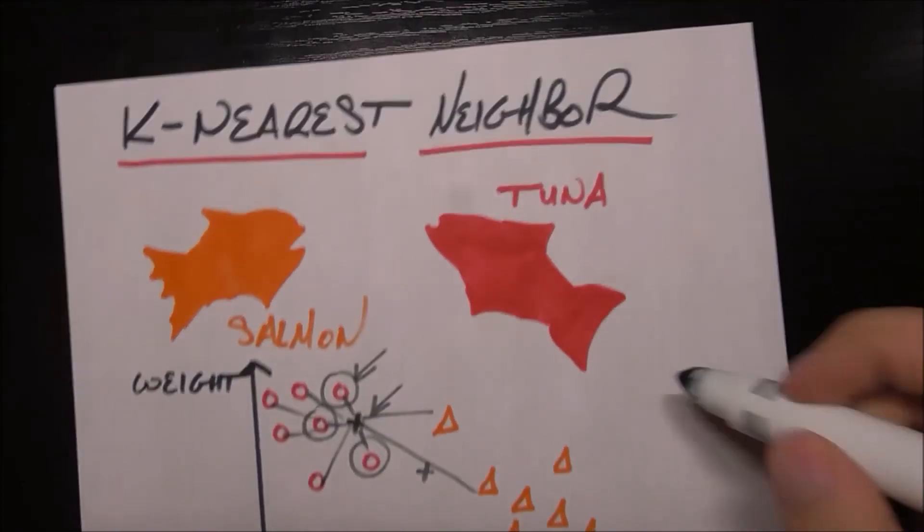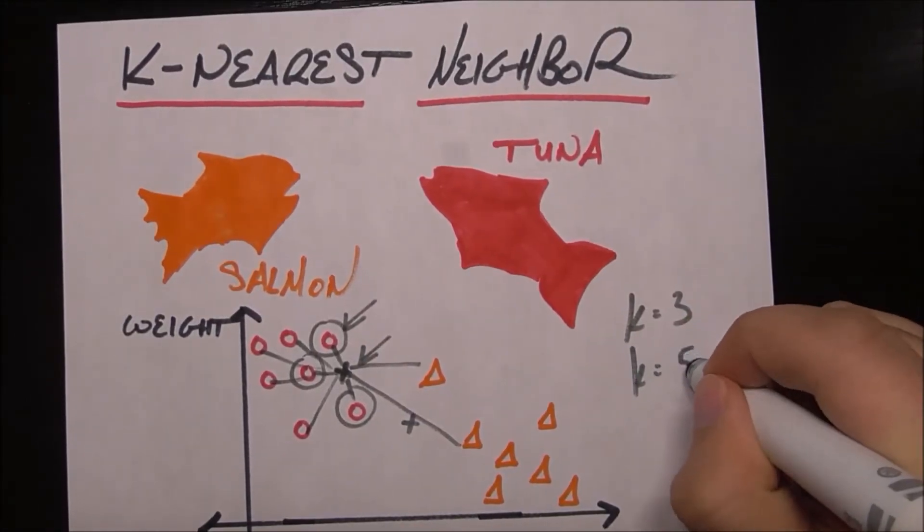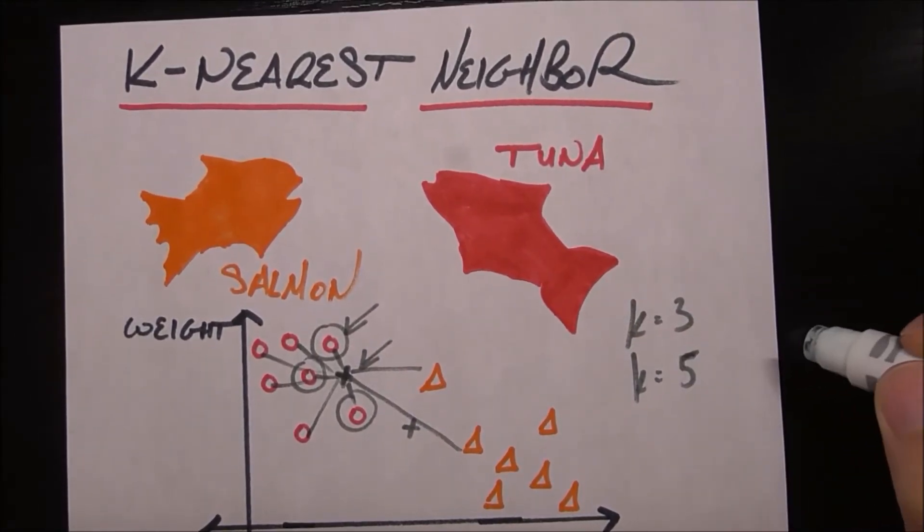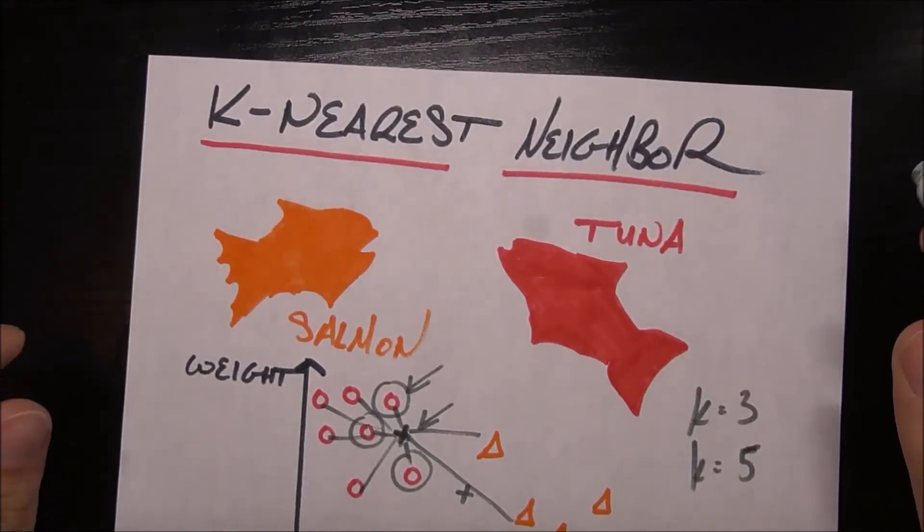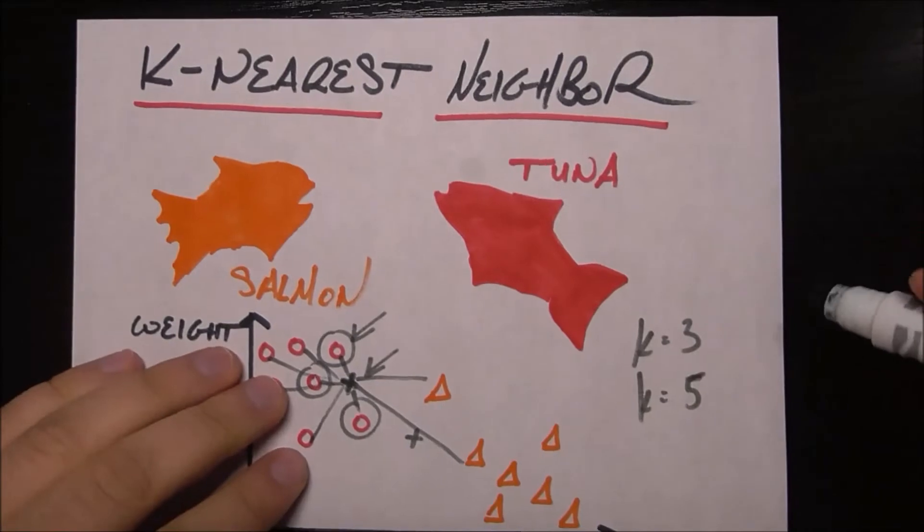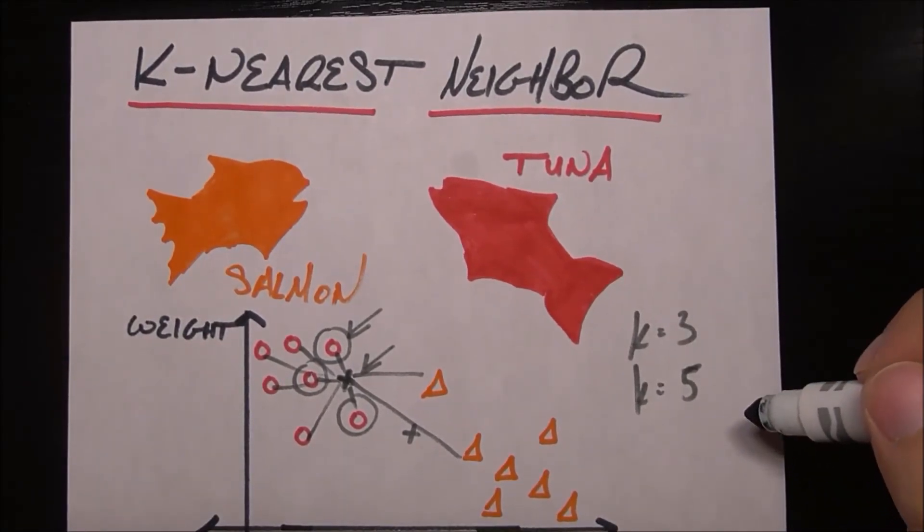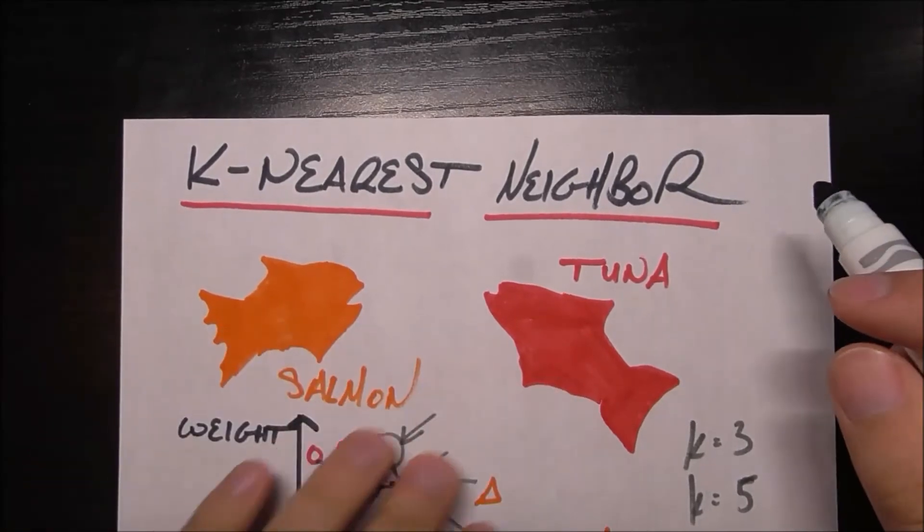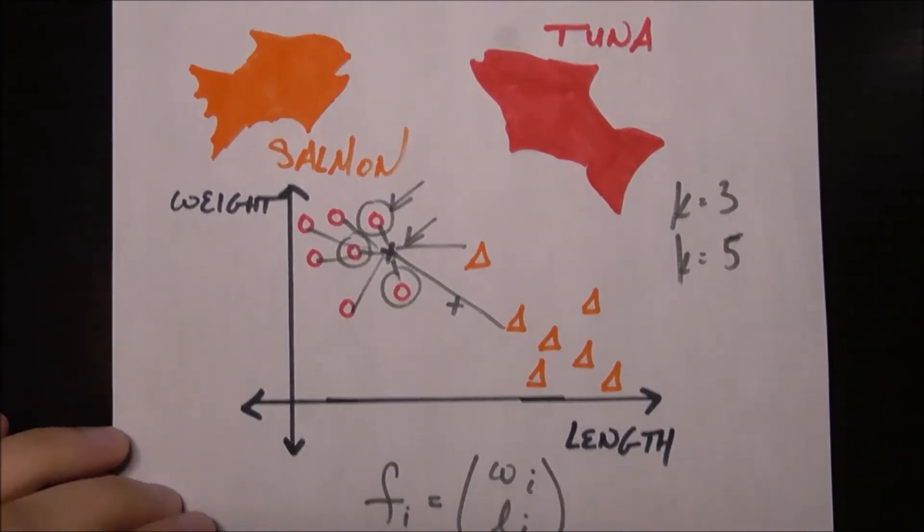One caveat: notice I said things like set your number of neighbors k equal to three or set it equal to five. Why did I pick odd numbers? Well, if I picked four there's always the chance you're going to have two salmon and two tuna and then you're kind of stuck. So it's nice to pick an odd number so there's never a tie. Of course if you have multiple classes, not just two, then it gets a little bit more tricky, but with two classes it's better to pick an odd number.